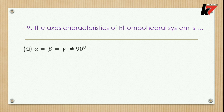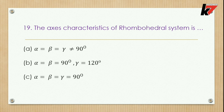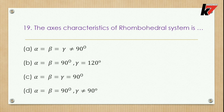Question 19: Crystal system axial angles — options include α=β=γ≠90°, α=β=90° and γ=120°, α=β=γ=90°, and α=β=90° and γ≠90°. Option B is for hexagonal; option C is for tetragonal and cubic; option D is for monoclinic; option A is for the rhombohedral system, which is the correct answer here.